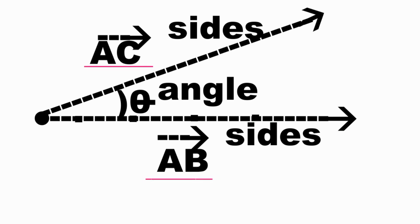These are the sides of the angle, ray AB and ray AC. And the intersection of these two rays is the vertex of the angle.